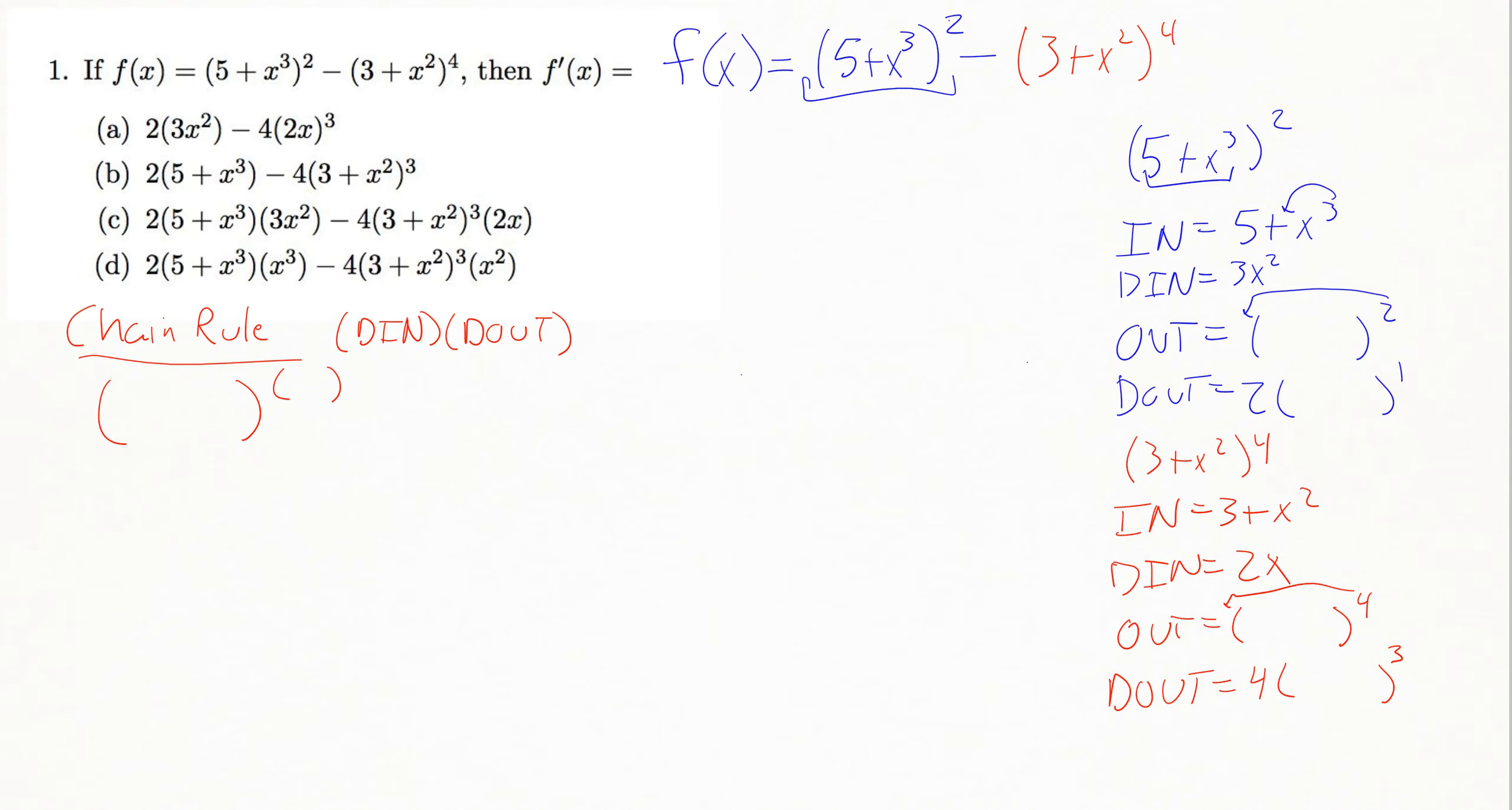So now we've broken down our problem, and now we can go ahead and bring all those pieces back together to get our final answer for our derivative, our f prime of x. So, looking at the first piece, this was a chain rule. We needed to do a d in, d out on this.